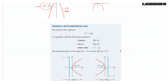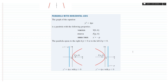If a parabola is horizontal, we have the equation y² = 4px. In that case the focus is at point (p, 0) and the directrix is the line x = -p. So the focus is at (p, 0), the vertex is at (0, 0), and the directrix is at x = -p.